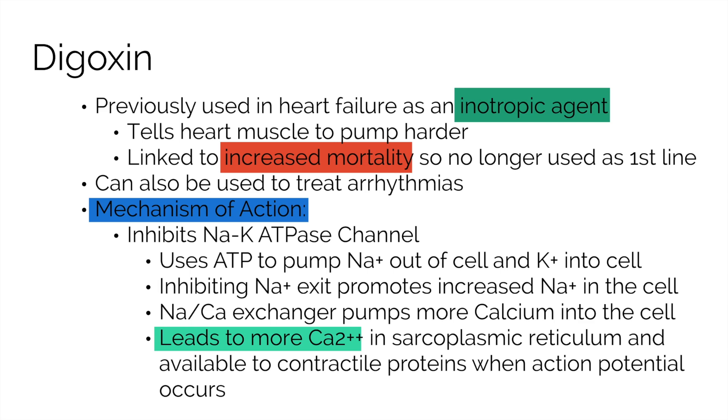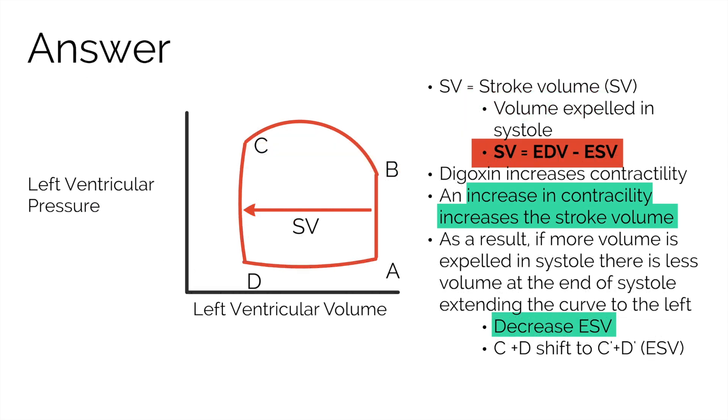Now, let's look at the effect of digoxin on the pressure-volume loop. Here, we depict the normal pressure-volume loop. Remember, digoxin makes the left ventricle pump more vigorously. Like any pump, if the pump pushes harder, it'll push out more volume. The volume with each contraction of the heart is called the stroke volume. Stroke volume is the end diastolic volume minus the end systolic volume. This should make sense, as it is the volume at the end of filling minus the volume still present at the end of the ventricle contracting.